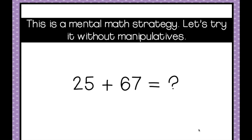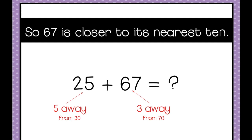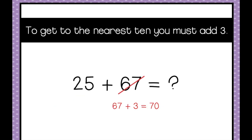So compensation is a mental math strategy. Let's try it without manipulatives: 25 plus 67. We take whichever number is closer to its nearest 10. 25 is 5 away from 30 and 67 is 3 away from 70, so 67 is closer to its nearest 10. We're going to cross out the 67 and make it 70 — we had to add 3 to get to 70.